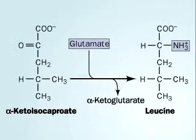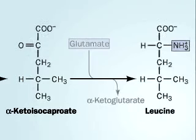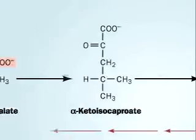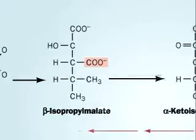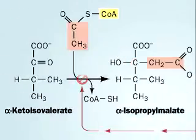Finally, an amino group is transferred from glutamate to make leucine. Alpha-ketoglutarate is a byproduct of the reaction. Leucine regulates its own synthesis by inhibiting an earlier step.